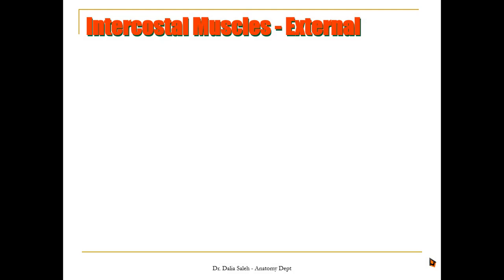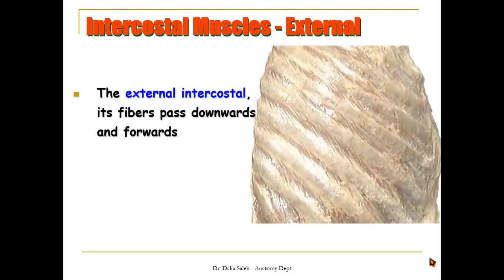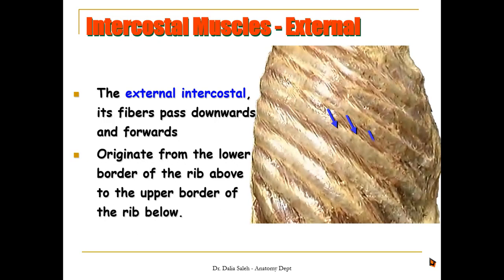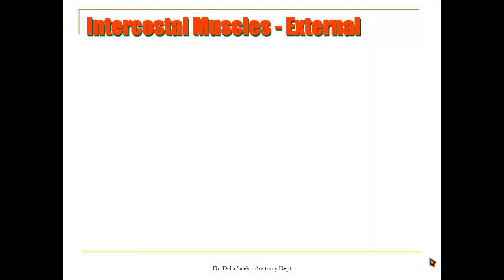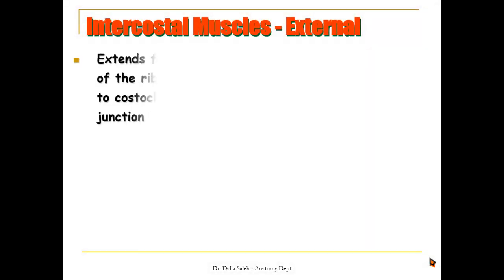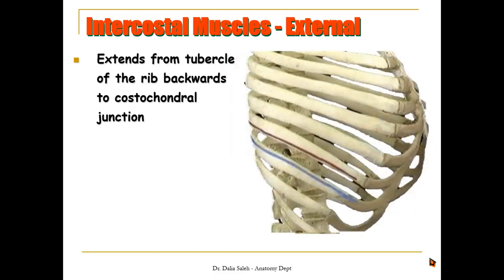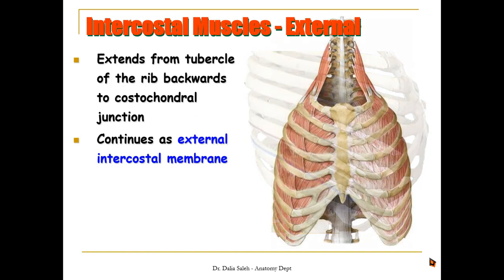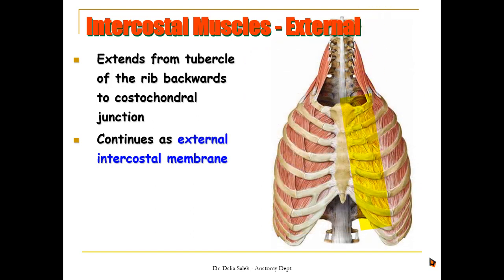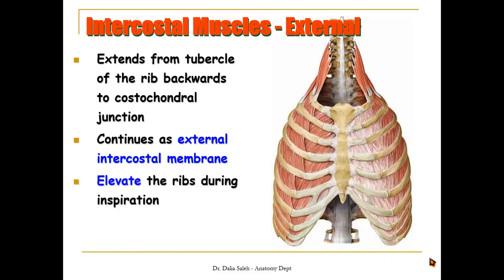We start first with the external intercostal muscles as we can see in this picture. The direction of its fibers are downward and forward. These muscles originate from the lower border of the rib above to the upper border of the rib below. Each external intercostal muscle extends from the tubercle of the rib at the back till the costochondral junction at the front. At this level it continues as the external intercostal membrane.